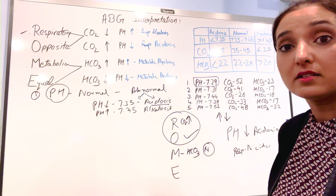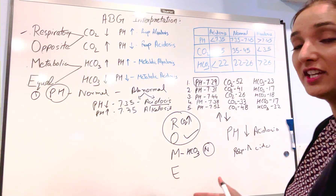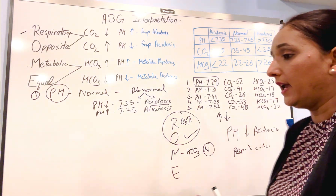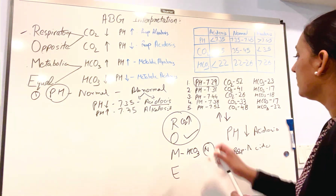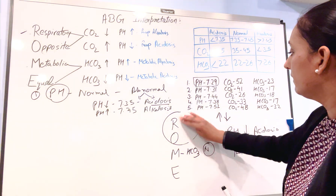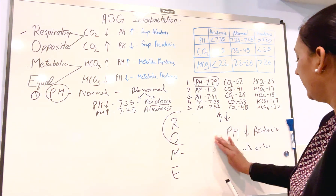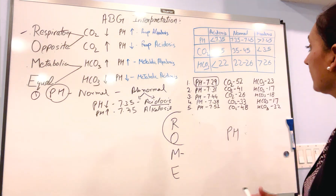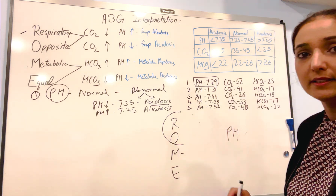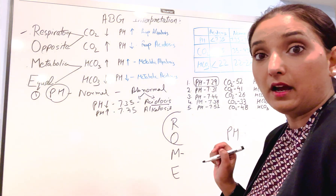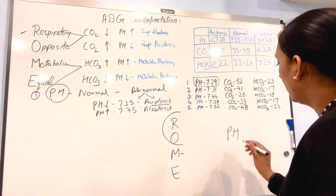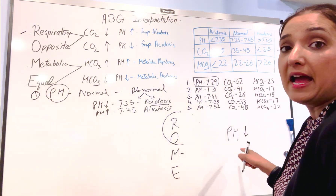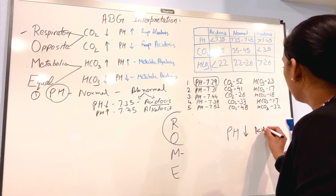Let's solve the next question using the ROME method. In this case, pH is 7.31. Is it low or high? It is low — it's going down, so that means this is acidosis. We write down acidosis.